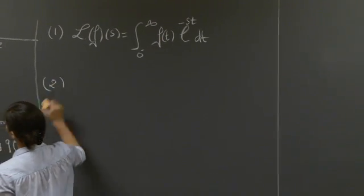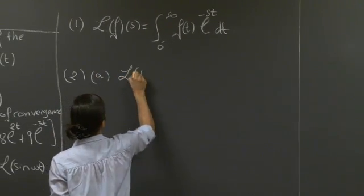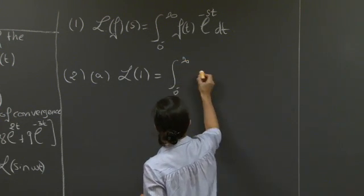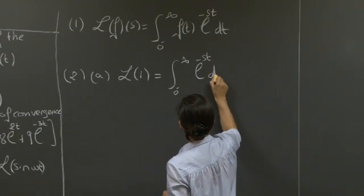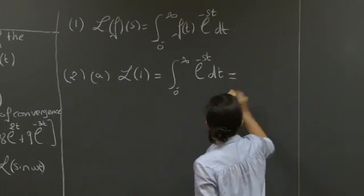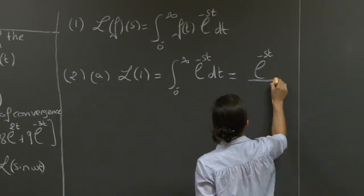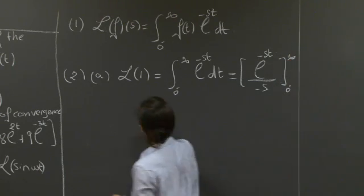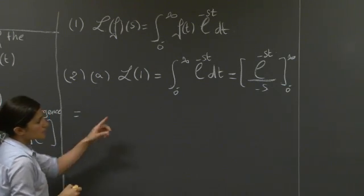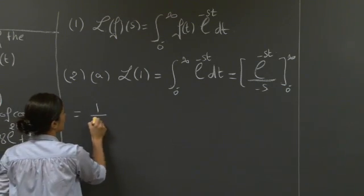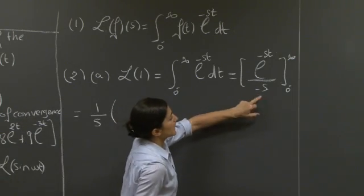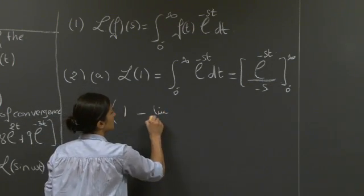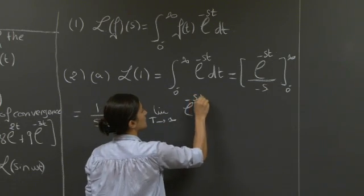Using this definition, we can go ahead and compute our first Laplace transform, L of 1. I'm just going to substitute 1 in that integral, which gives me basically the integral of exponential minus st dt, which is just exponential minus st over minus s from 0 minus to infinity. If I expand this, I end up with 1 over s. The minus reverses the order of integration, so I start with 0, which is 1, minus the limit when t goes to infinity of exponential minus st.